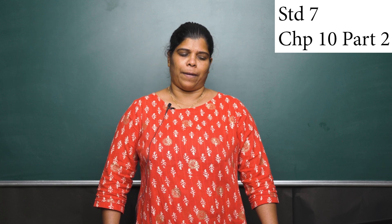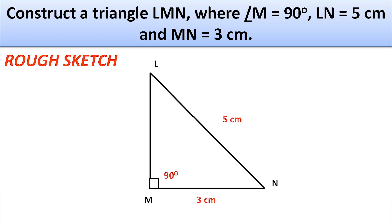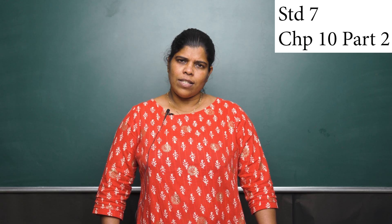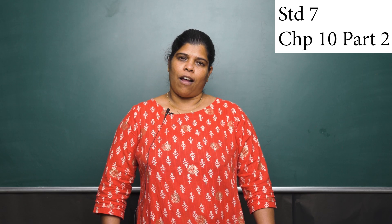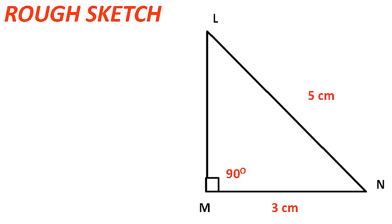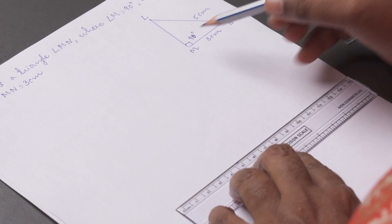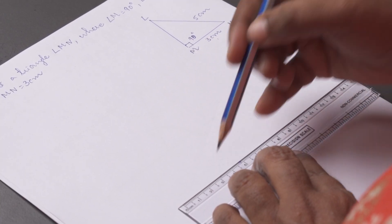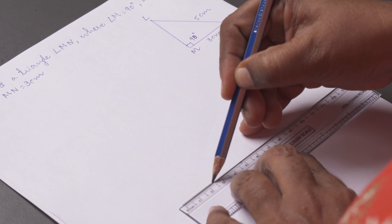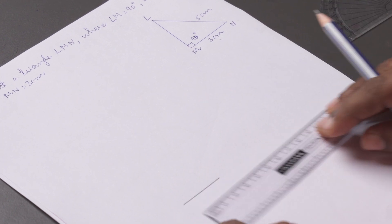Let us take one example. Construct a triangle LMN where angle M is equal to 90 degrees, LN is equal to 5 cm, and MN is equal to 3 cm. We need to draw the rough sketch first — it is a right-angle triangle. Take a ruler and draw a line segment MN of length 3 cm.